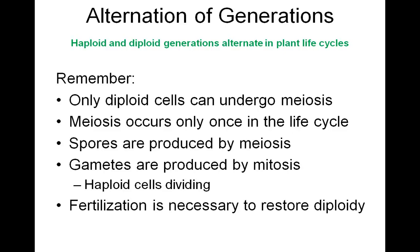Before we begin our discussion on the life cycles of these plant groups, let's first take a look at how plants alternate between two separate bodies — one being haploid, the other diploid. We will discuss alternation of generations. Remember, only diploid cells can undergo meiosis. Meiosis occurs only once in the life cycle. Spores are produced by meiosis. Gametes are produced by mitosis. Fertilization is necessary to restore diploidy.